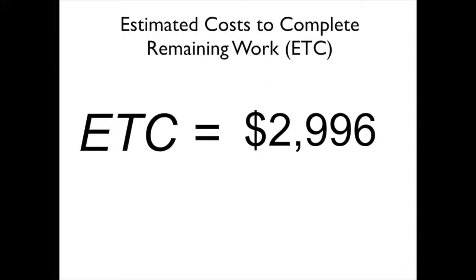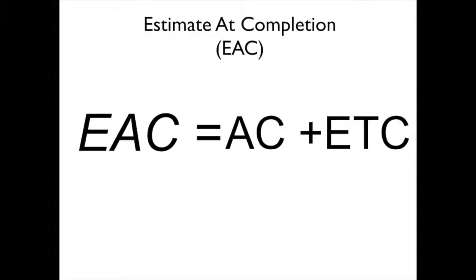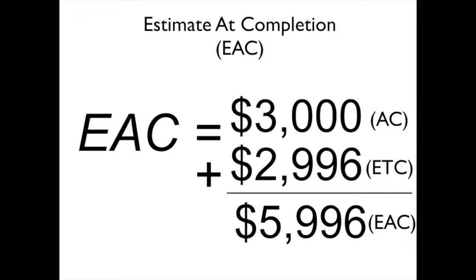Now we can take that value and add it to our current actual costs, and we can get our estimate at completion, or EAC. This is what the project will cost when it gets done. So in this case, we take our $3,000 of AC, add it to our ETC that we just calculated, and we get an estimated at completion of $5,996.